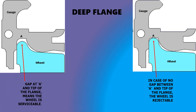Deep flange: hold the gauge in this fashion and if there is a gap between point A and the tip of the flange, the wheel is in acceptable limit. However, if the flange tip touches the gauge at point A, then the wheel lies at rejection limit.